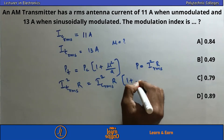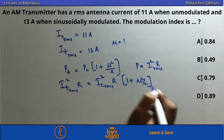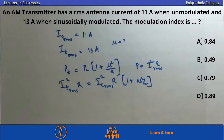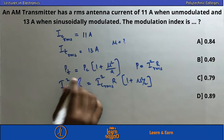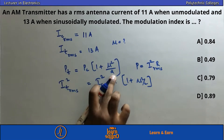The equation is: I_T(RMS)² × R = I_C(RMS)² × R × (1 + μ²/2). We can cancel the resistance R from both sides.